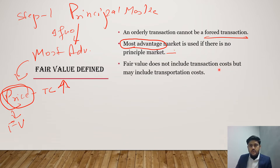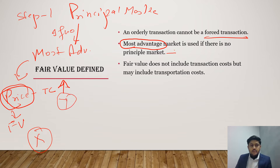Fair value does not include transaction costs but may include transportation costs. For example, if you are measuring fair value for market X but the asset is in market Y, the cost to bring the asset from Y to X is a transportation cost and should be considered in the fair value measurement — so fair value would be after deducting this transportation cost.